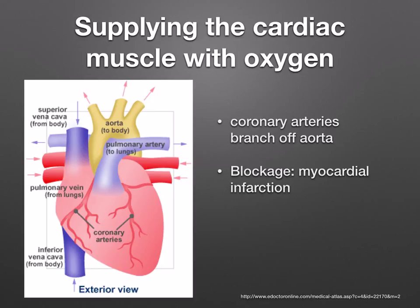Although oxygenated blood passes through the left side of the heart in vast quantities, the heart doesn't actually use this oxygen — it needs its own blood supply, which it gets from its own blood vessels called the coronary arteries. These branch off the aorta shortly after it leaves the heart. Blockage of these arteries, for example by a blood clot, can lead to myocardial infarction — a heart attack — because the area of muscle supplied by the artery will not receive oxygen and can die. Have a look at the coronary arteries in the diagram.